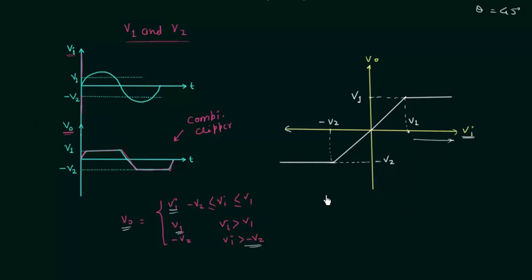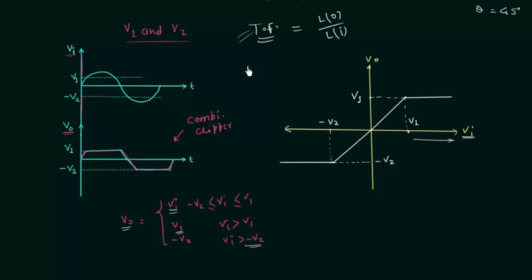I hope the transfer characteristics of clipper circuits are clear to you. If you have any doubts you may ask in the comment section. This will be easy if you have already studied control systems, where transfer function is defined as the Laplace transform of the output divided by the Laplace transform of the input, assuming all initial conditions to be zero.